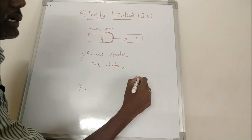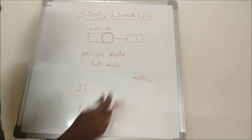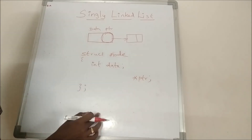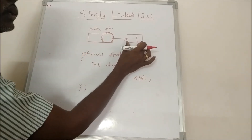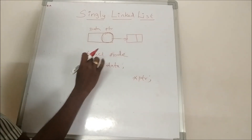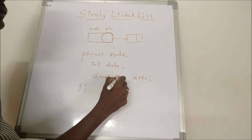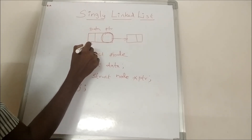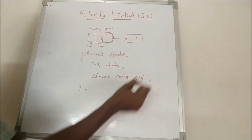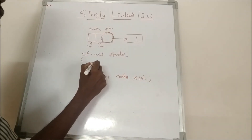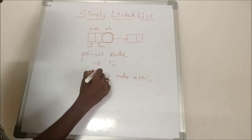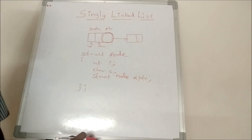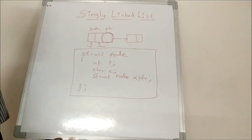To declare a pointer: for an integer pointer use 'int star', for a character pointer use 'char star'. Similarly, to store the address of a node, use 'struct node star'. If each node has two data fields — for example, one integer 'i' and one character 'c' — then the structure contains those two data fields plus the link pointer pointing to the next node.